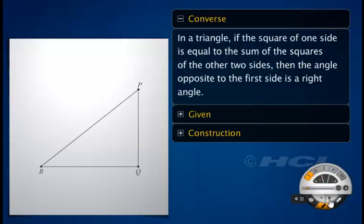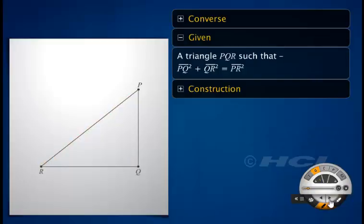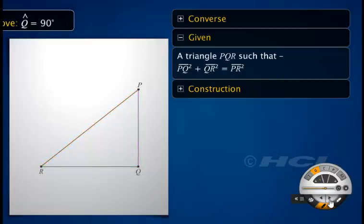Now let's prove the converse of the Pythagoras theorem, which states that in a triangle, if the square of one side is equal to the sum of the squares of the other two sides, then the angle opposite to the first side is a right angle. We are given a triangle PQR such that the sum of the squares of sides PQ and QR equals the square of PR. We need to prove that angle Q is a right angle.